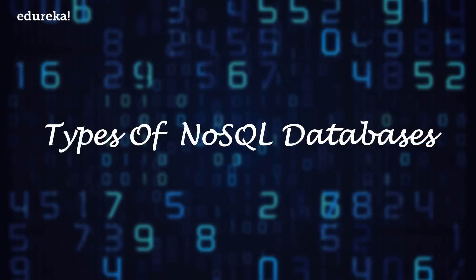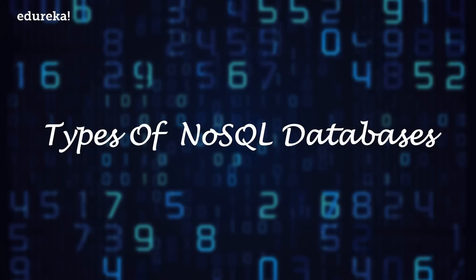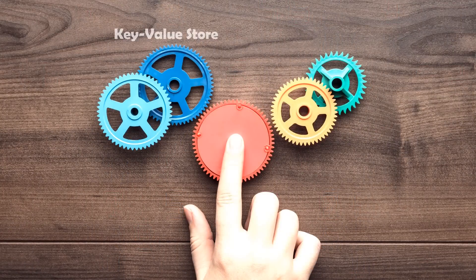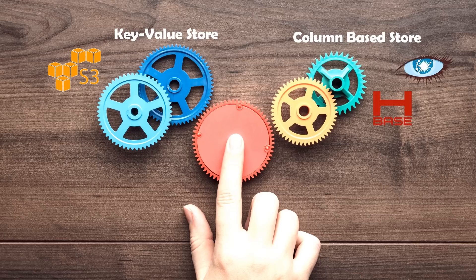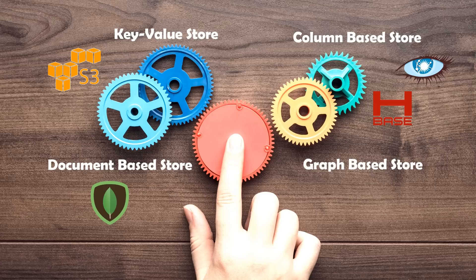Let's see the types of NoSQL databases. There are four different types. First, key-value store — it has a big hash table of keys and values, for example Amazon S3. Next, column-based store — each storage block contains data from only one column, like Cassandra and HBase. Next, document-based store — it stores documents that are made up of tagged elements, for example CouchDB or MongoDB. Next, graph-based — a network database uses edges and nodes to represent and store the data, for example Neo4j.